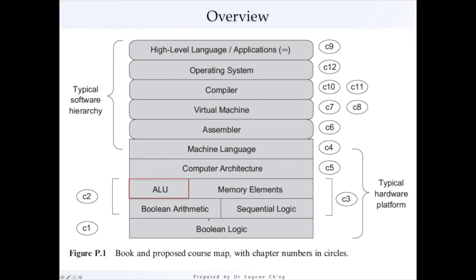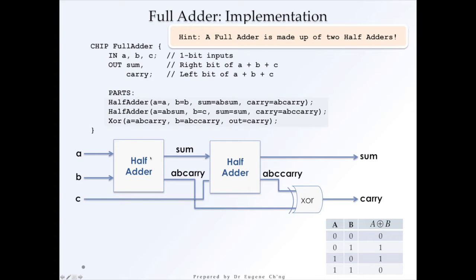Before we come to sequential logic and leading up to memory elements, we need to look at the ALU. In the previous lecture we covered how we can use half adders, two of them, to construct the full adder. Before even that, we covered how we can use some of the elementary Boolean logic gates to construct the half adder.